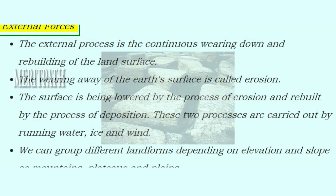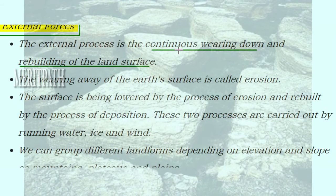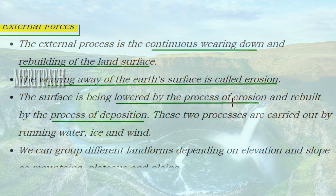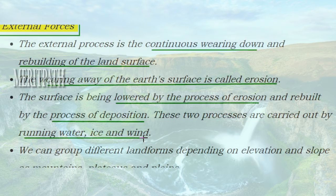External processes involve the continuous wearing down and rebuilding of the land surface. For example, soil erosion washes away the upper layers of soil, but planting more trees helps rebuild the surface because roots firmly hold the soil. The process of wearing away the earth's surface is known as erosion, while the rebuilding of the surface is done by the process of deposition.